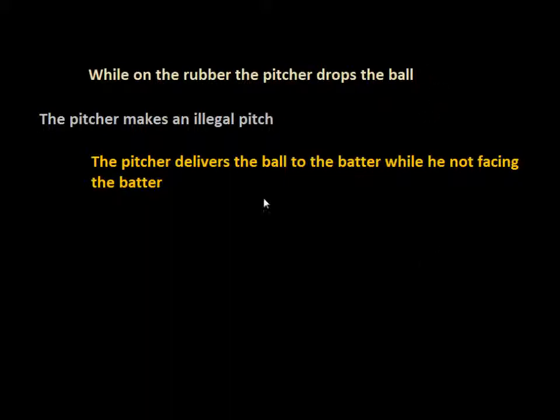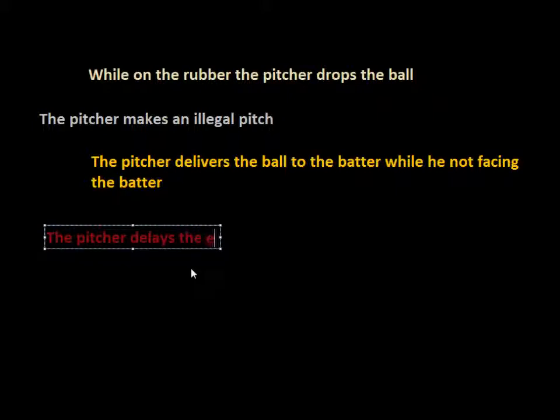The next way is that if the pitcher unnecessarily delays the game. We've looked at the rule that says if there's nobody on base, the pitcher has 12 seconds to release the ball for the next pitch. But that rule only applies when there's nobody on base. If there is a runner on base, that same 12-second time rule doesn't apply, but it would be at the umpire's discretion as to what constitutes unnecessarily delaying the game.